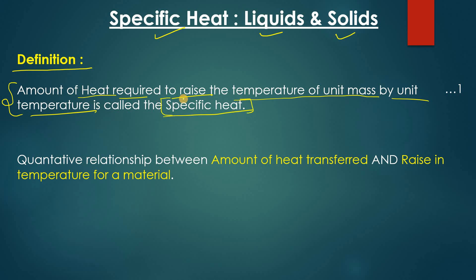Here, what we are saying is: how much amount of heat is required to raise the temperature of unit mass — meaning one kilogram of mass — by unit temperature, suppose one degree Celsius. So if we have to raise the temperature of one kilogram of any material by one degree Celsius, how much amount of heat is required — this is called the specific heat.